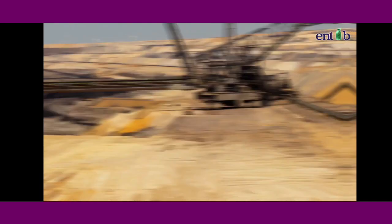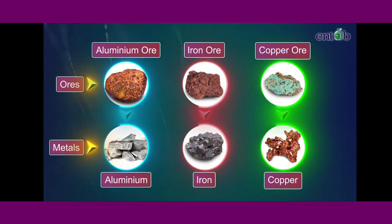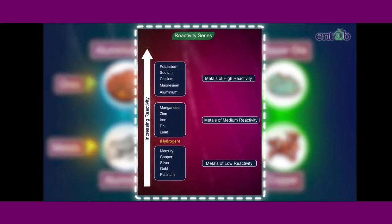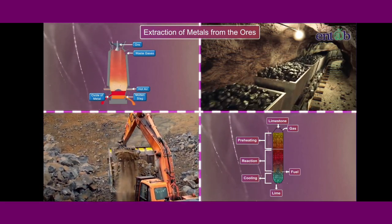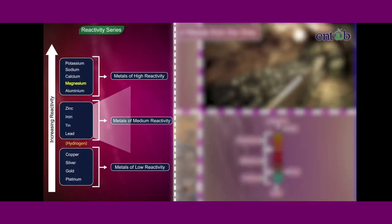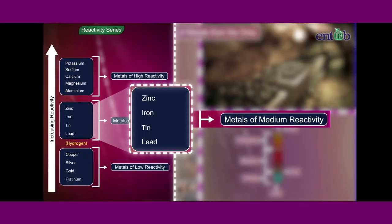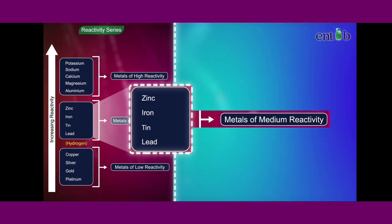Hello everyone. Metals are extracted from their ores using a process based on their reactivity series position. Different techniques for extracting metals from their ores are used depending on their reactivities. Take a closer look at the metals in the center of the reactivity series. They have a moderate reactivity.